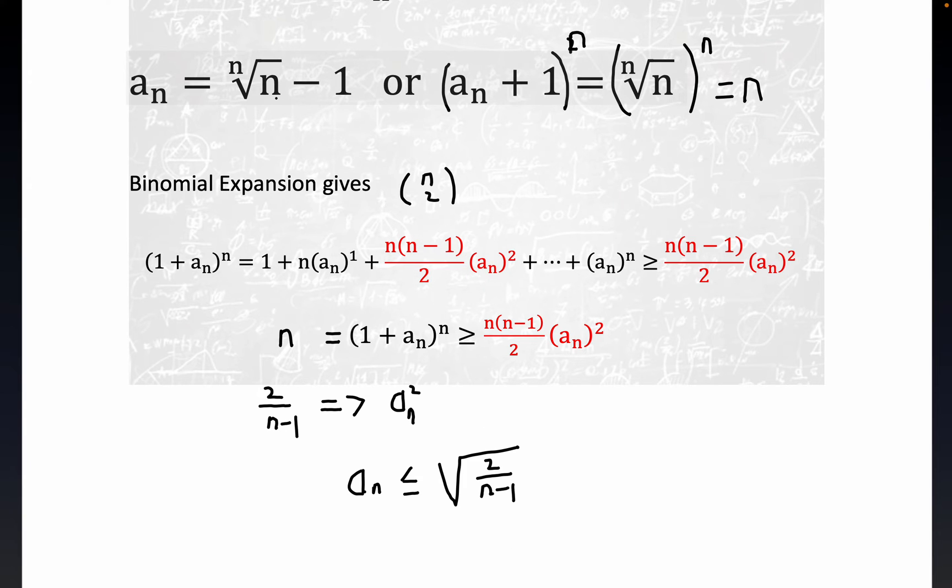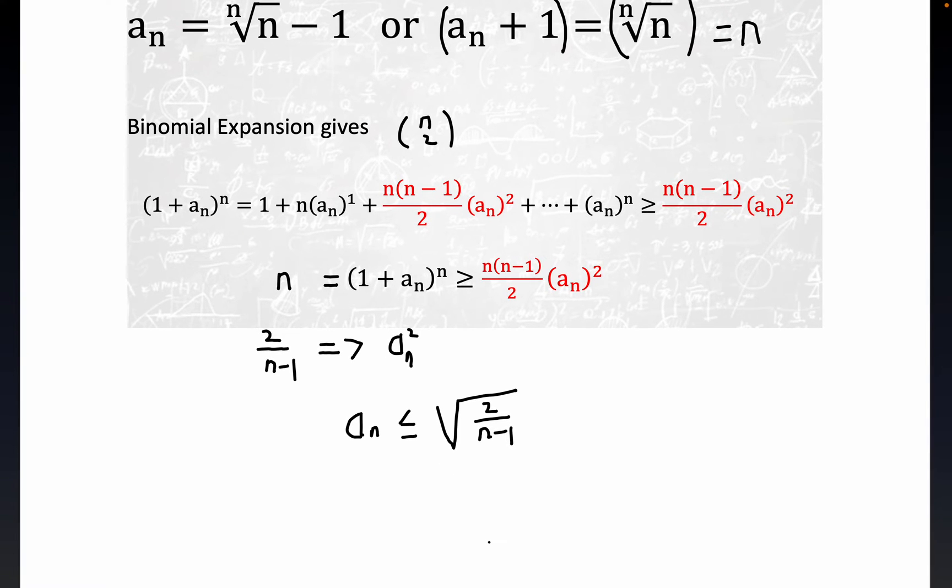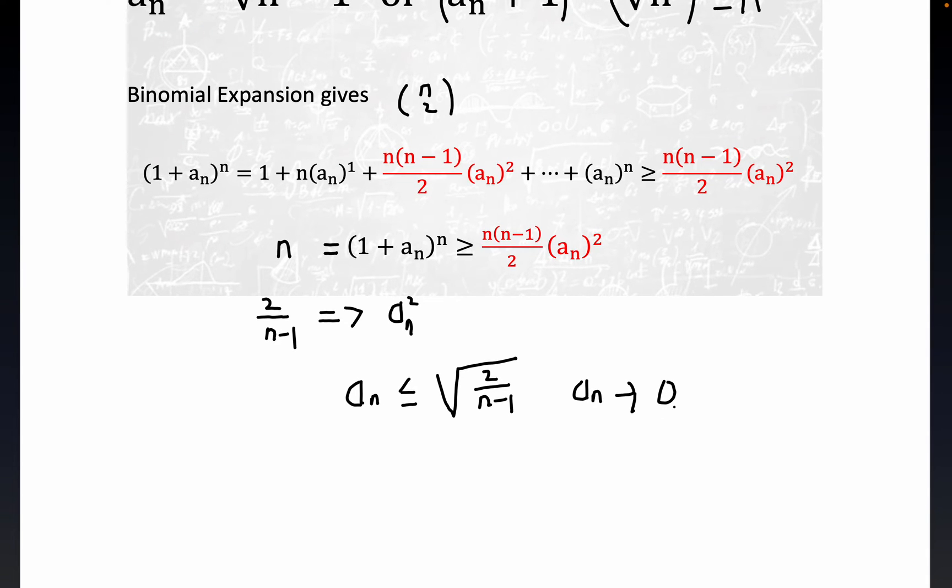If we can show that this limit is equal to zero, we will have proven our result here. And this clearly, this definitely tends to zero. A sub n definitely approaches zero as n approaches infinity.